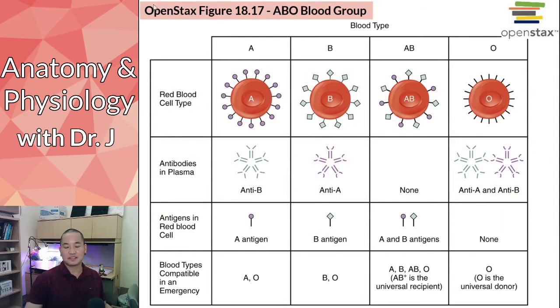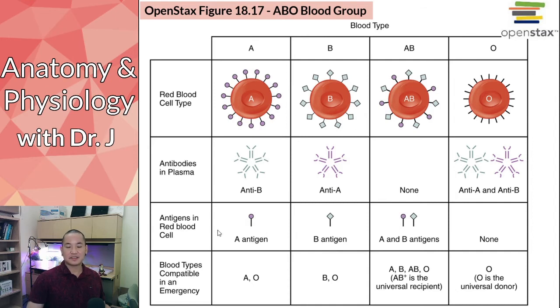With ABO blood types — this is the OpenStax version — you can see on these red blood cells there are small structures protruding from the surface. These are called antigens.